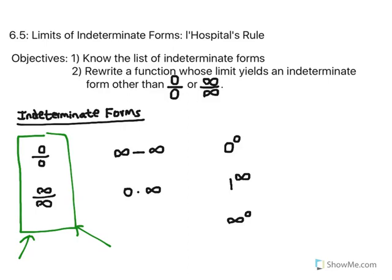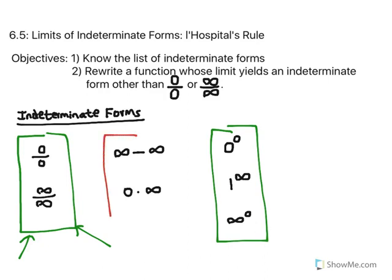Yesterday's lesson dealt with what to do if you had one of these 3 indeterminate forms — you would use a special procedure where you assume the limit exists and is equal to y, take the natural log of both sides, and proceed from there. Today, we want to consider what happens if you try direct substitution and get one of these 2 indeterminate forms: 0/0 or ∞/∞.